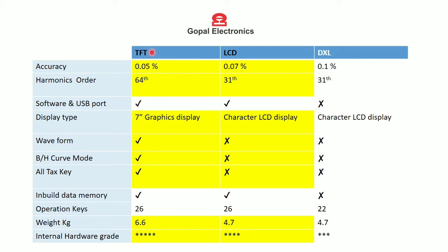Now I will highlight the advantages of the TFT model over the LCD model. The TFT model is more accurate. It can measure harmonics up to the 64th order, whereas the LCD model measures up to the 31st order. The graphical display is provided in the TFT model only, so it can show waveform and BH curve modes. The all-text key is also exclusive to the TFT model, and as per hardware grade, the TFT model is leading.